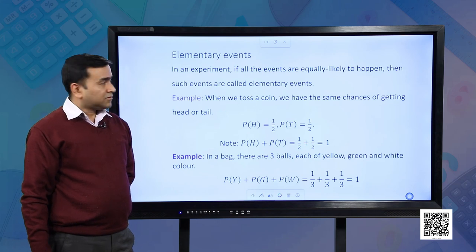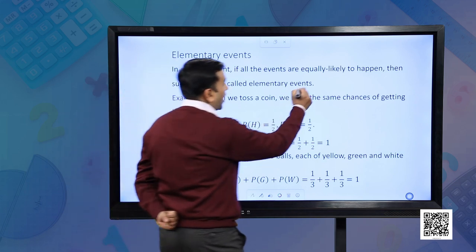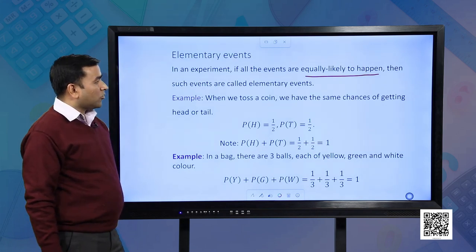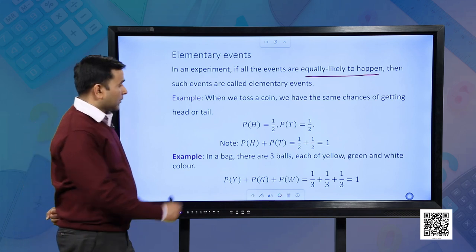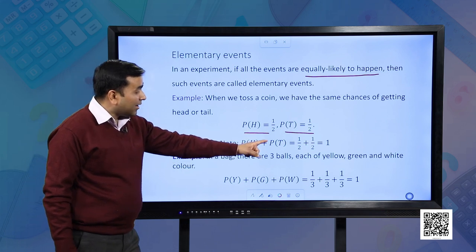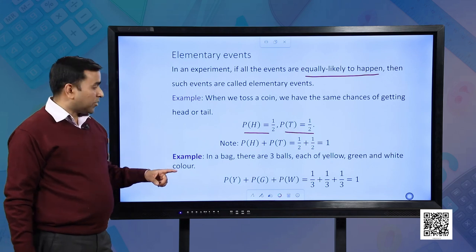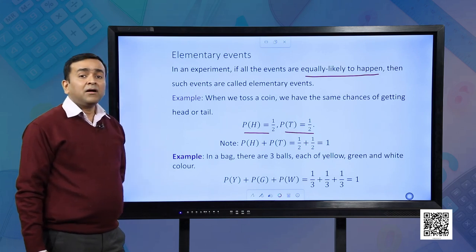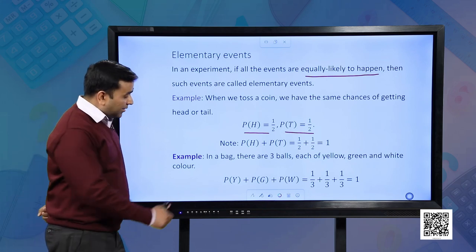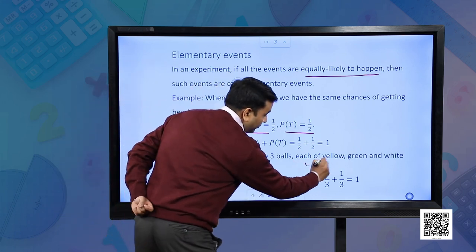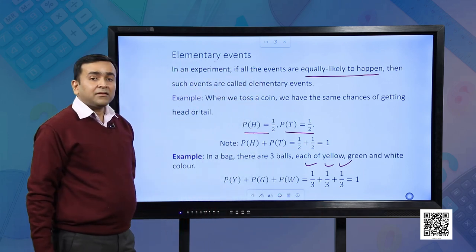Let us understand elementary events. In an experiment, if all the events are equally likely to happen, then such events are called elementary events. For example, when we toss a coin, we have the same chance of getting head or tail — probability of heads is 1 by 2 and probability of tails is also 1 by 2. Note that the sum of probabilities of head and tail is 1. Another example: if a bag has 3 balls of yellow, green and white color, each has an equal chance of being selected, so the probability of each is 1 by 3, and the sum is 1.